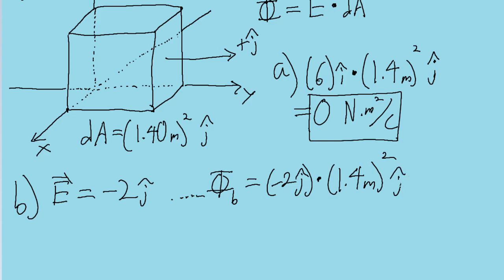The area isn't changing since we're still looking at the same face. So now both of our terms have the same unit vector. So we can multiply these together and expect to find a non-zero result. So when we do that, when we multiply them together, we find a flux of negative 3.92 newton meters squared per coulombs. So that is the flux in part b.